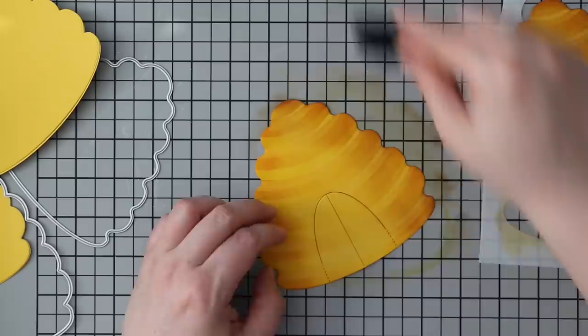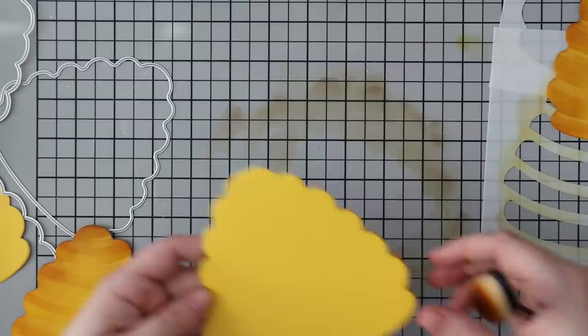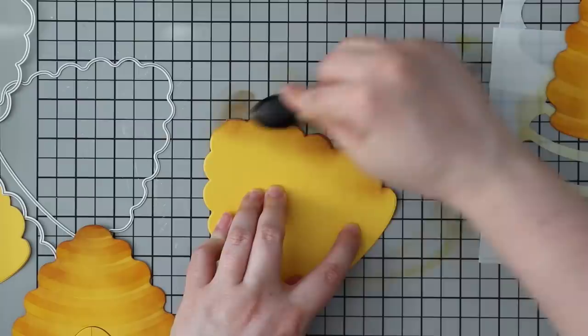As a final step, I'm taking Vintage Photo distress ink and blending that in from the edges. You can see how it gives that extra depth. I was really thinking like deep, dark honey—so I did all my blending on the front pieces.